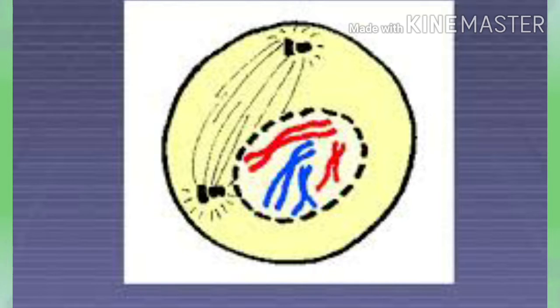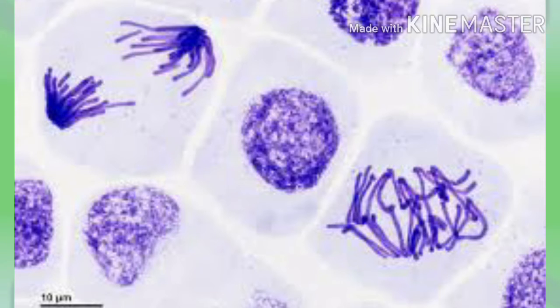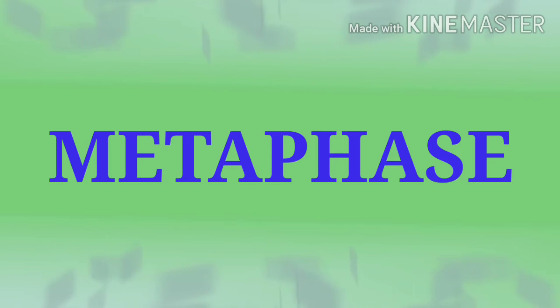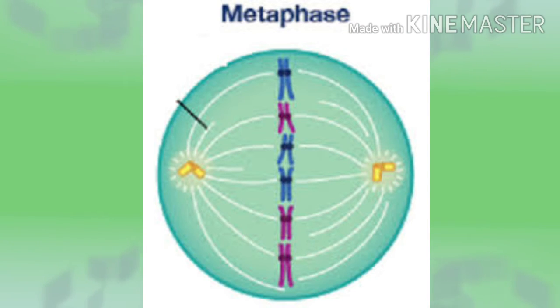Chromosomes split lengthwise to form chromatids connected by centromeres. The nuclear membrane disappears, and centromeres containing rod-like centrioles divide and form the ends of the spindle. In metaphase, chromosomes move to the spindle equator and spindle fibers attach to the centromeres.